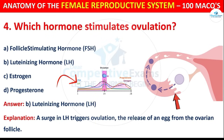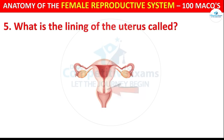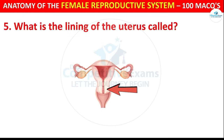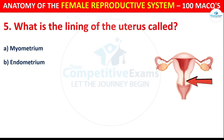Question number 5: What is the lining of the uterus called? Options are: Myometrium, Endometrium, Perimetrium, or Cervix.